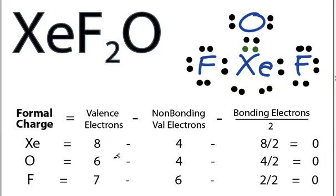For the Oxygen, six valence electrons, four non-bonding valence electrons, and four bonding divided by two. Six minus four minus two is zero. Nothing's changed on the Fluorines, so they're also gonna be zero.